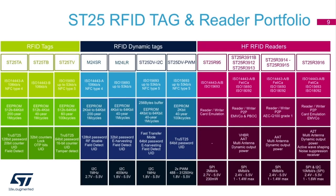ST offers a broad range of industry-leading tags and readers for NFC solutions. The ST25TA family supports ISO 14443 Type A and Type 4 communications with a wide range of memory and feature choices. The ST25TB family is mainly used in the transportation industry. The ST25TV tag supports ISO 15693 Type 5 protocol — you can think of the V as the Roman numeral 5 to remember this family supports Type 5.